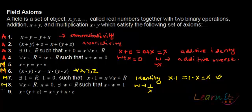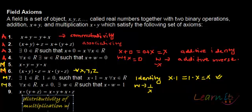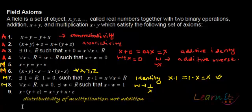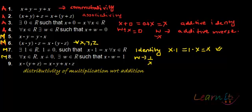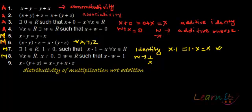Next very important property is the distributivity of multiplication with addition. Multiplication with respect to addition, as you can see here. So there is distributivity of multiplication with respect to addition. So these are the field axioms and they all are satisfied by R.